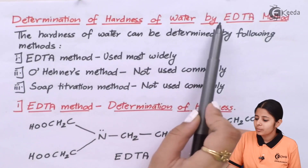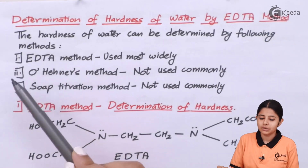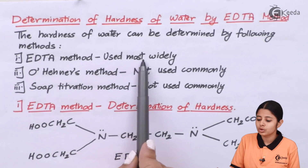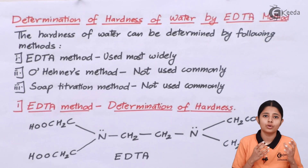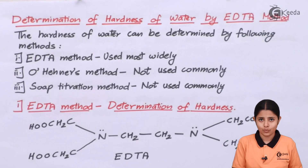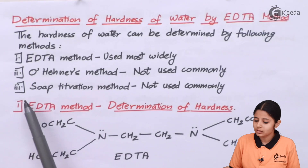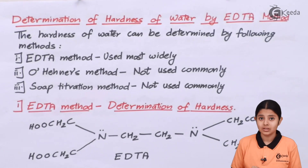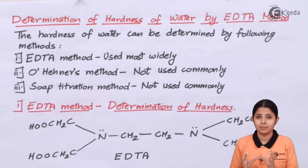Determination of hardness of water by EDTA method. The hardness of water can be determined by following methods. There are three main methods, but in today's session we are going to study the EDTA method. The first is the EDTA method, used most widely, because EDTA is a substance which can easily help us in determining the amount of hardness or impurities in the water. The second is O-Henna's method, not used very commonly, and the third is the soap titration method, which also isn't used commonly.